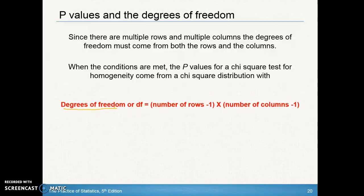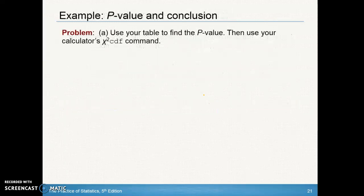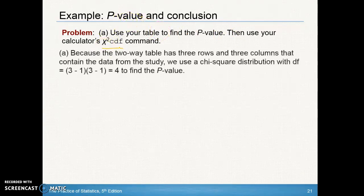With our chi-square statistic we need to find the degrees of freedom. It was easy with the goodness of fit test because we only had one row — we just took the number of categories minus one. In this case, since we have rows and columns, we have to multiply them together: the number of rows minus one, times the number of columns minus one. Just make sure you're not including your totals in the count of rows and columns. Our two-way table had three rows and three columns, so two times two equals four — the degrees of freedom is four.